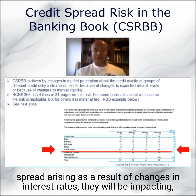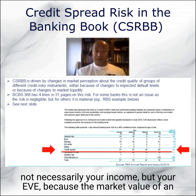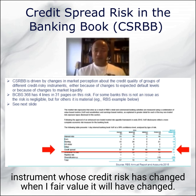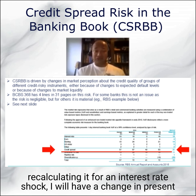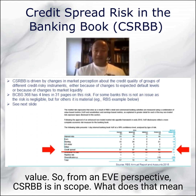If you have changes in credit spread arising as a result of changes in interest rates, they will be impacting not necessarily your income but your EVE, because the market value of an instrument whose credit risk has changed, when I fair value it, will have changed. So if I am present valuing that number today and then recalculating it for an interest rate shock, I will have a change in present value. So from an EVE perspective, CSRBB is in scope.